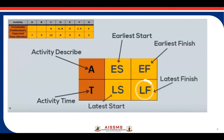We'll go to the example again. The first step is to construct the project network diagram. For the network diagram, we need to first understand the node structure. Here, A means the activity description, and T means the activity time or duration. ES and EF — early start and early finish — are calculated during the forward pass. LS and LF — latest start and latest finish — are calculated during the backward pass.